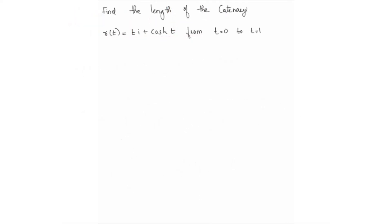Example: Find the arc length of r(t) = t·i + cosh(t)·j from t = 0 to t = 1. This is the vector-valued function. The length is computed from t = 0 to t = 1.